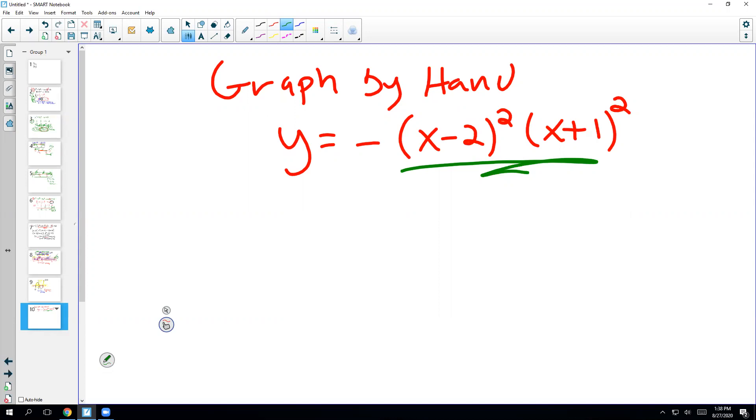The things that we want to take into account are the x-intercepts, y-intercept, and end behavior. So these are the three pieces of information we need to get from the formula. And then just like the activity we did in class, we just kind of follow the clues from there and figure out what the graph looks like.